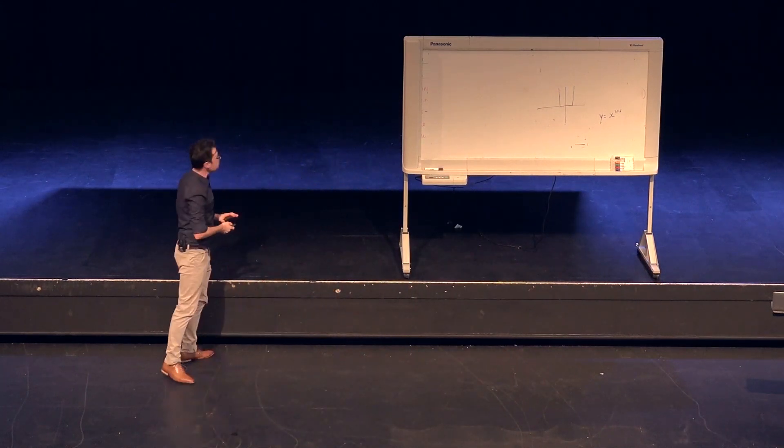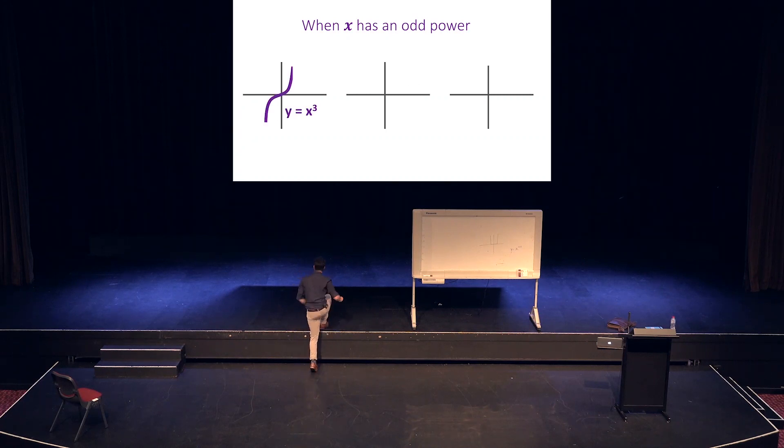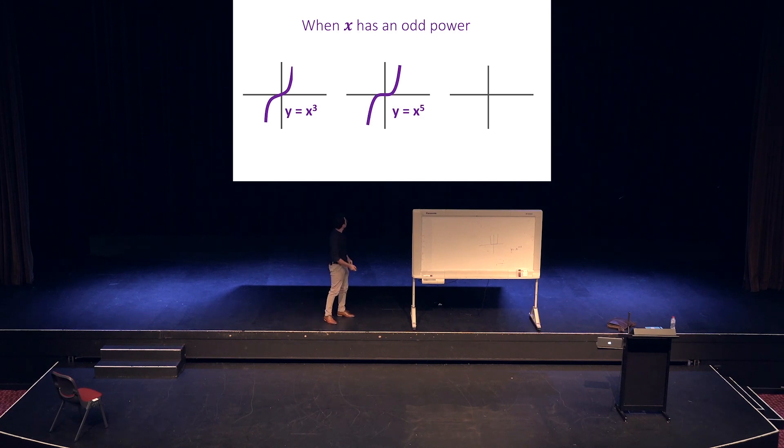And it's the same deal with your odd powers as well. So you've got when x has an odd power, you can have y = x^3, cubic, right? y = x^5, cubic, but a little bit squarer. And y = x^9, it's an even squarer cubic.